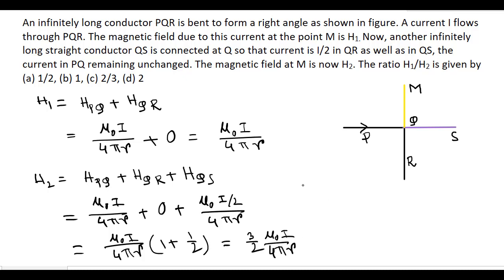Now calculate H1 by H2. So H1 by H2: mu 0 I by 4 pi R cancels, and this is equal to 1 by 3 by 2. So this is 2 by 3. C is the correct answer.